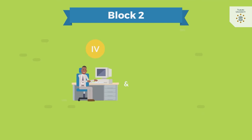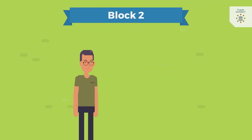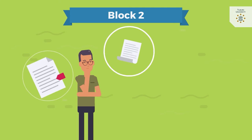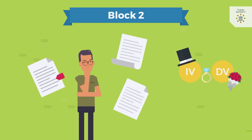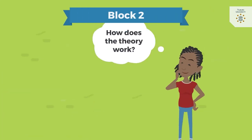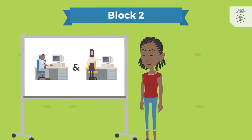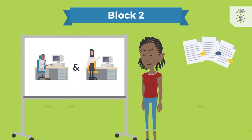Next, you elaborate on the expected relationship between your variables. In the introduction, you have already introduced the theory that explains the relationship between your independent and dependent variable. Now you shortly explain the theory. Then apply the theory to your variables — how does this theory explain the relationship between your variables?